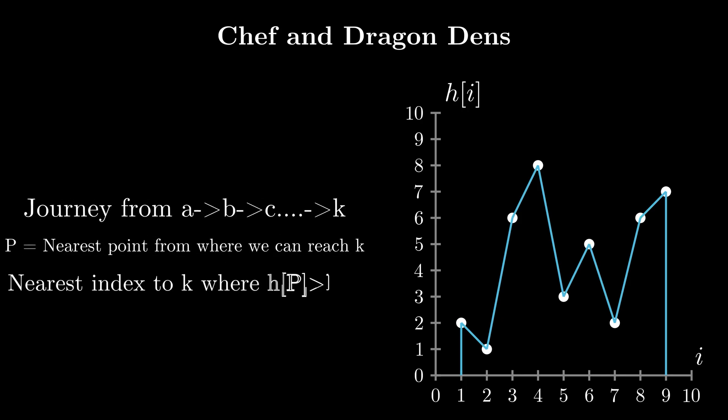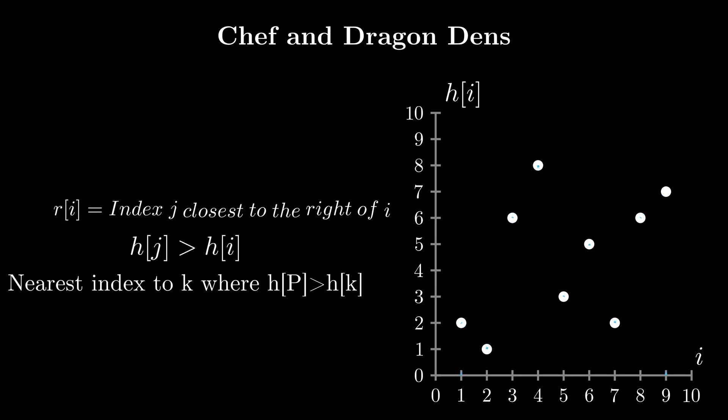Let's figure out a strategy for a journey from point A to point K. Let P be the nearest point to K in between points A and K from where we can reach K. P is always included in our journey, as there always exists a valid journey to P from all points where a valid journey to K exists. Let's define R[i] as this point P for all i with paths coming from the right. This means we need to find the minimum j such that j > i and H[j] > H[i].